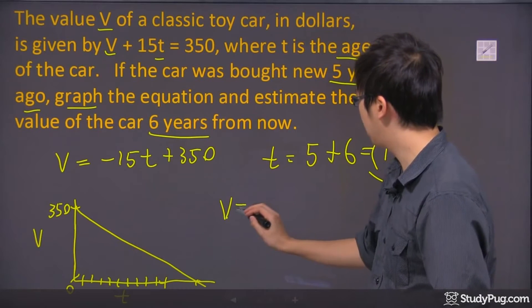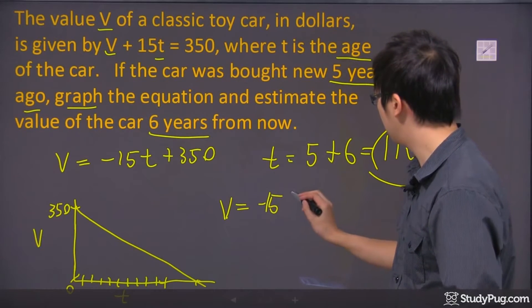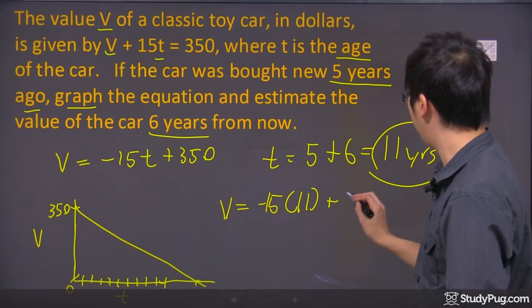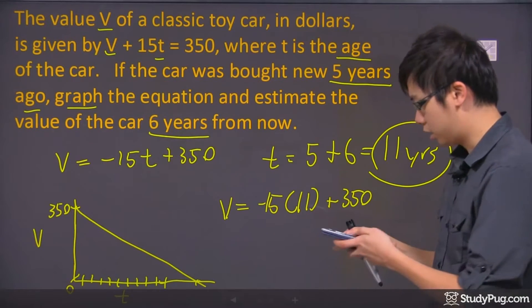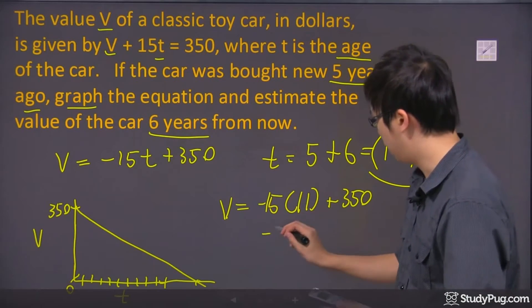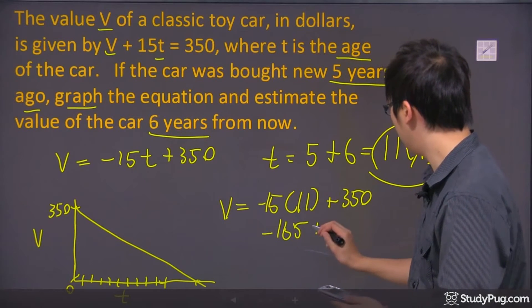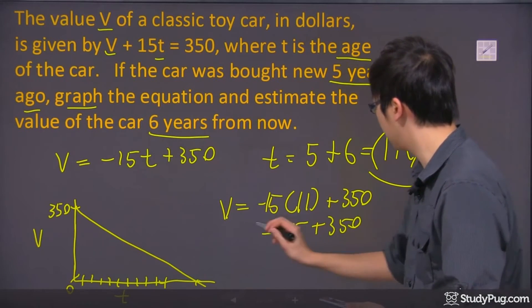So you get V = -15 times 11 plus 350, and let's figure out what that is. So you get -165 + 350 dollars.